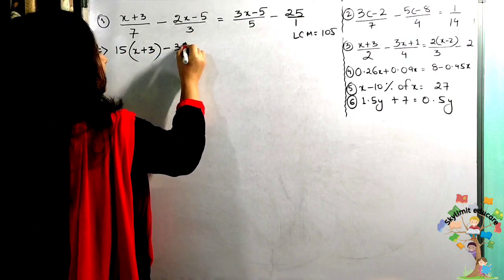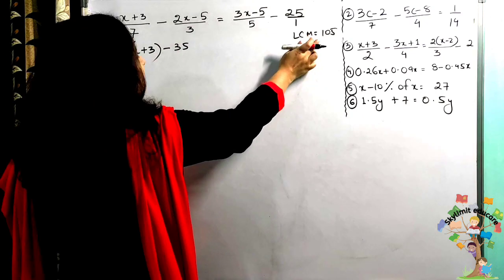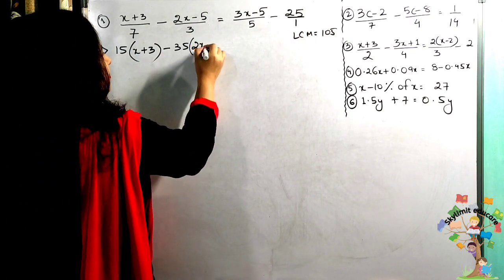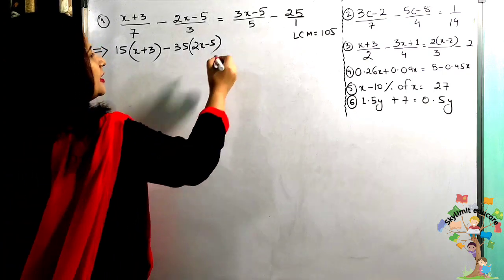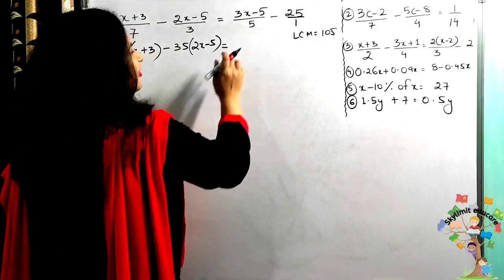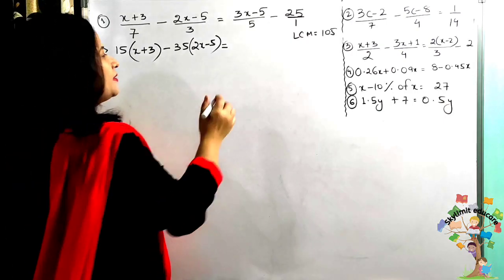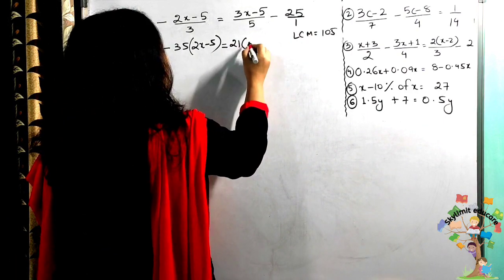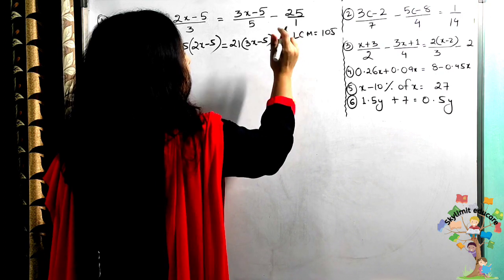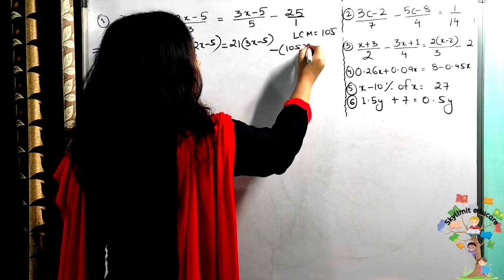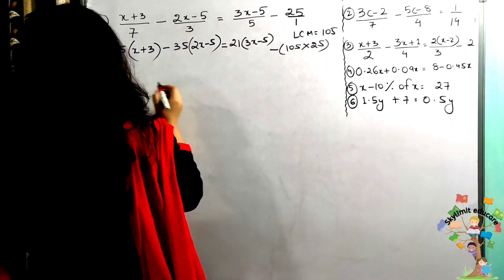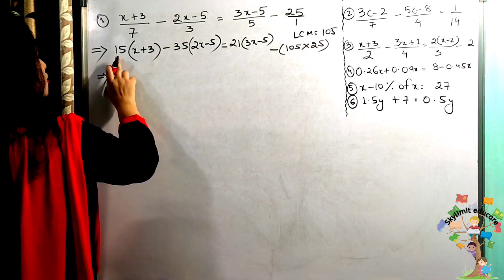Next, 105 divided by 3 gives me 35, and the numerator is (2x − 5). Then 105 divided by 5 gives me 21, so 21 multiplied to (3x − 5), and then 105 multiplied to 25.